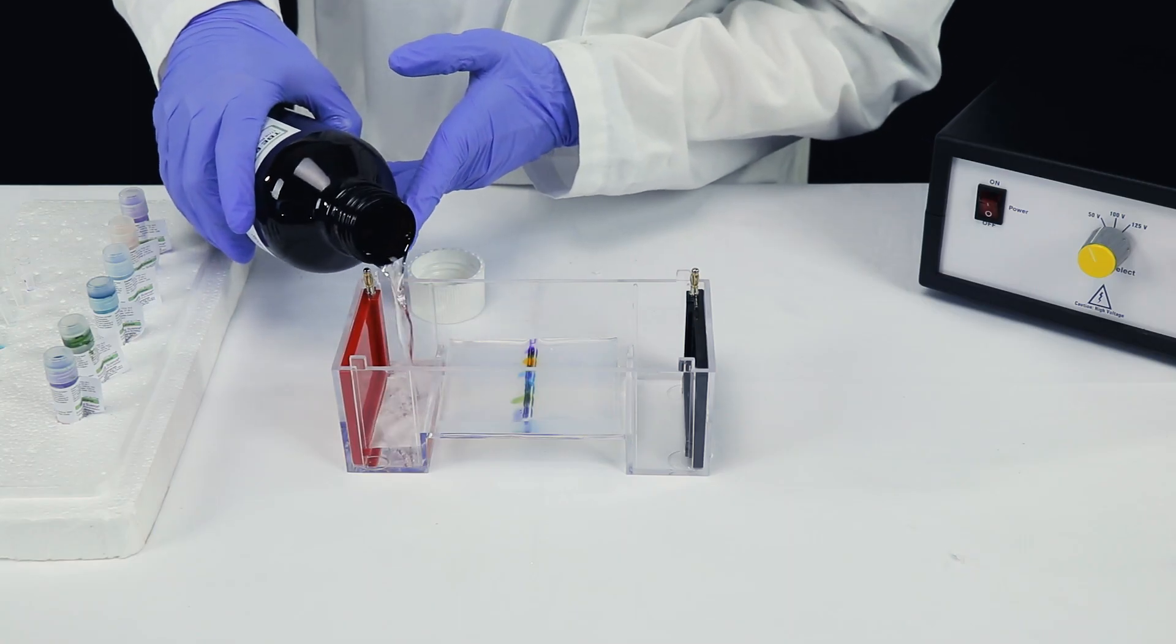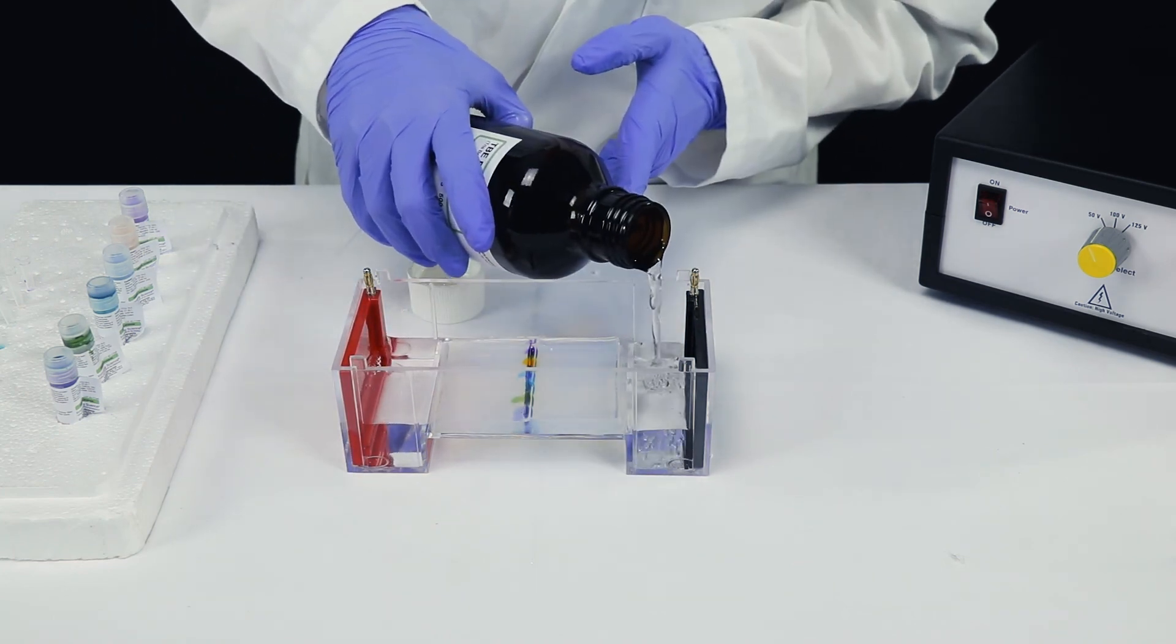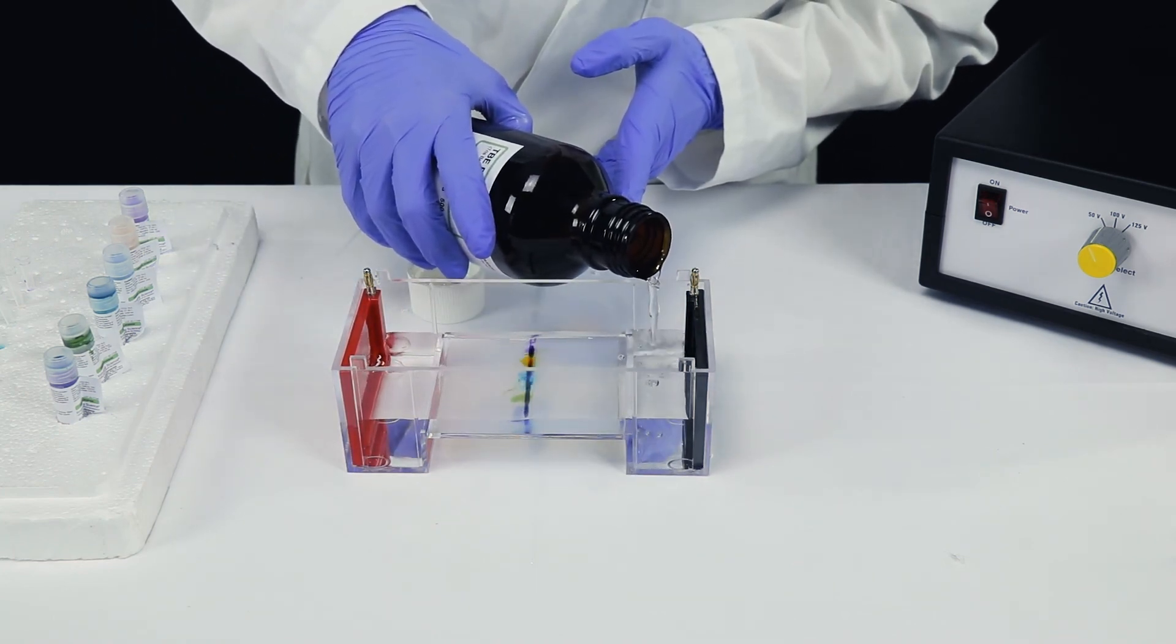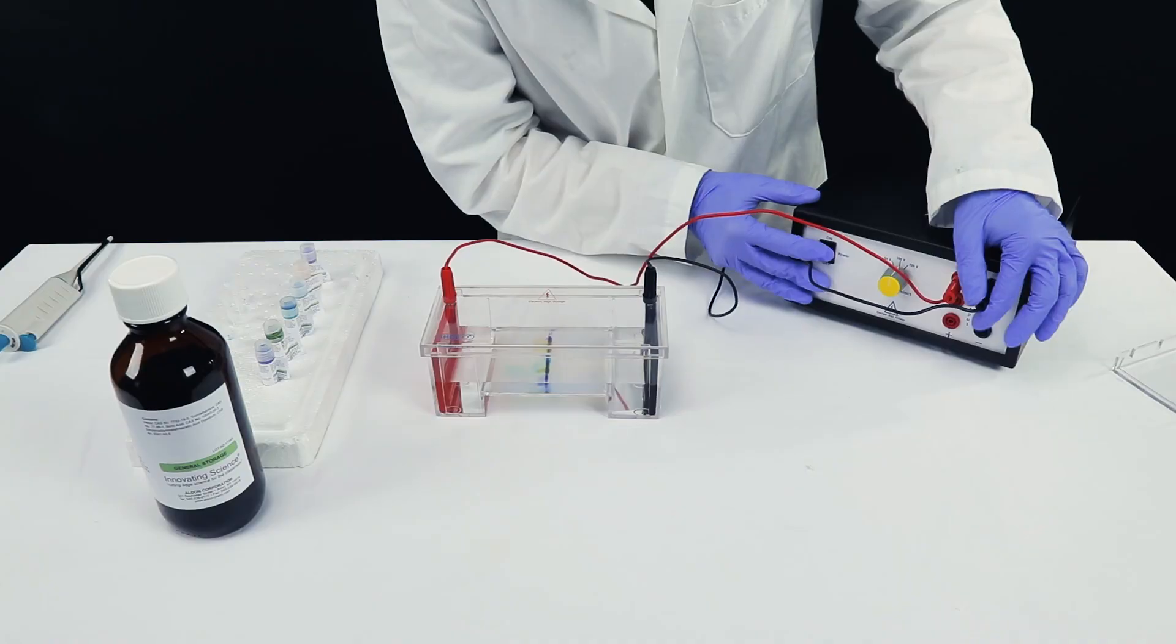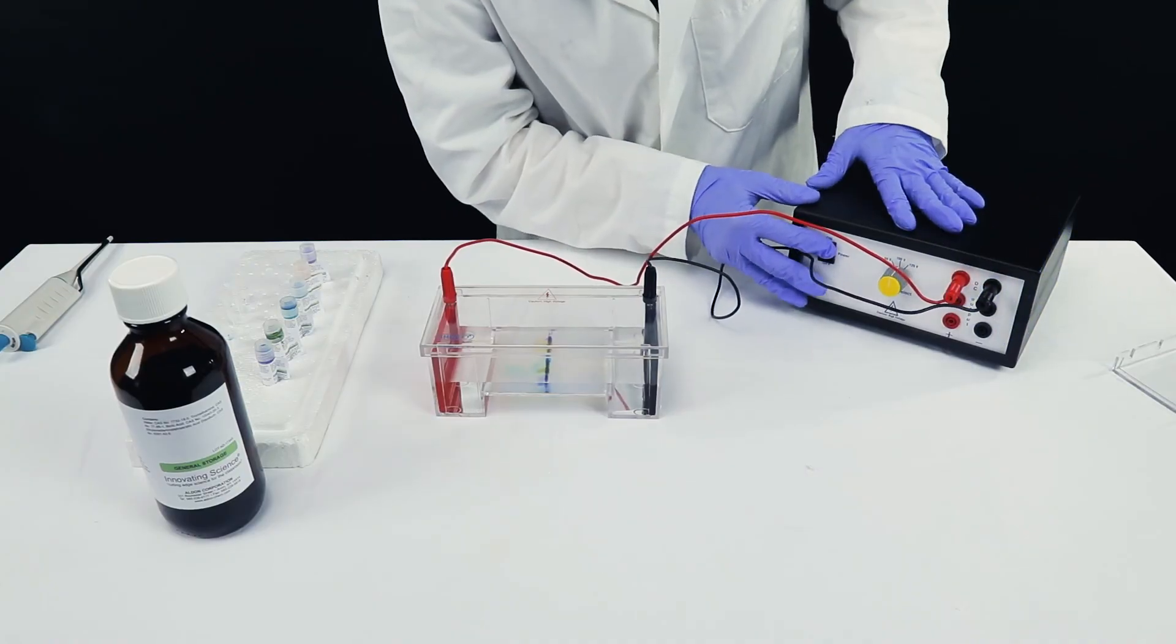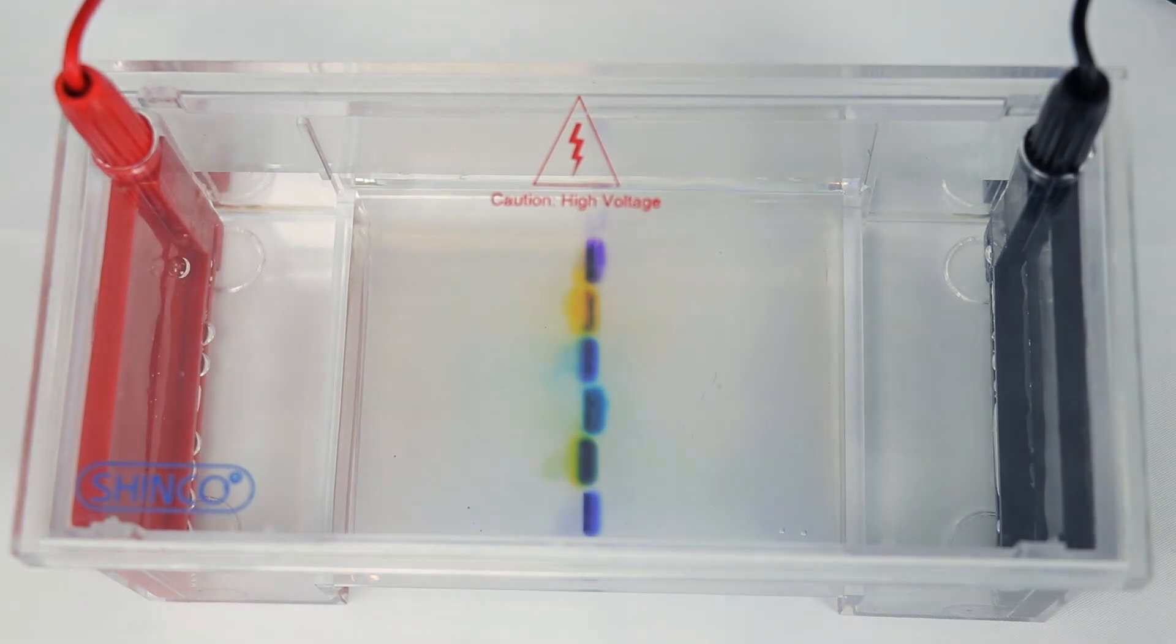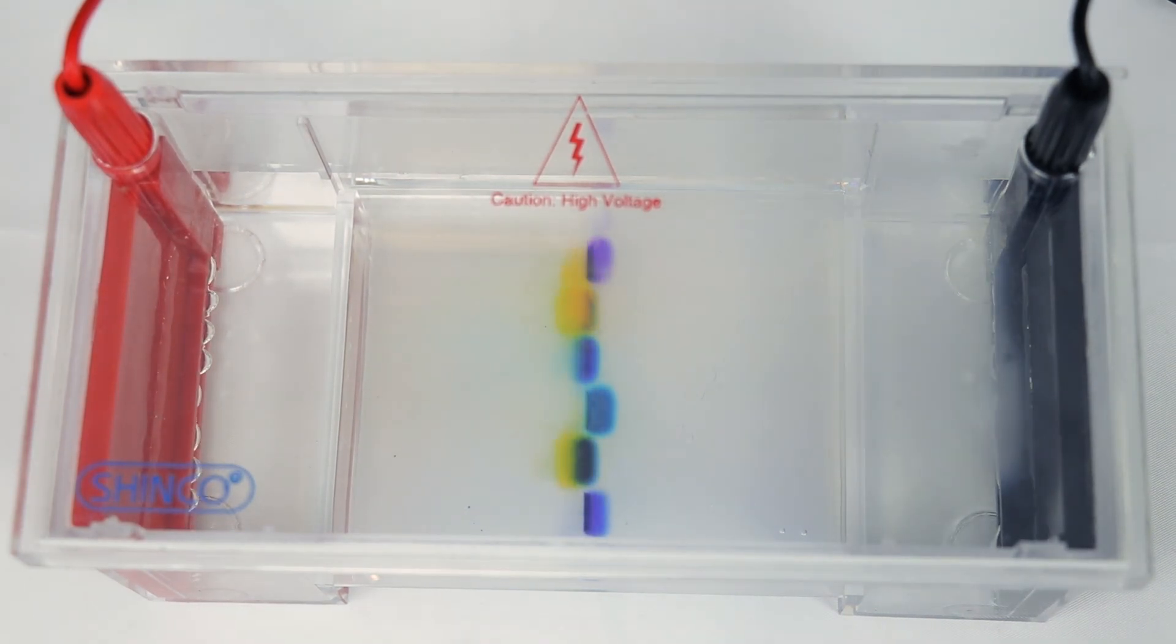Now, add the TAE buffer to the tank and fill just above the surface of the gel. After the wells are filled, close the cover on the tank and connect the electrodes to the power source. Although the separation doesn't happen quickly, you'll need to watch carefully so the dyes don't run off the ends of the gel.